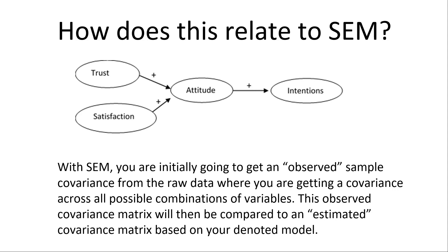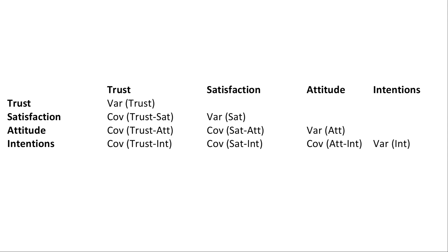Here's an example of what the observed covariance matrix looks like — it's looking at all possible covariances between constructs. Typically what you'll see on the diagonal is the variance of each one of those constructs: the variance of trust, the variance of satisfaction, attitude, and intentions. SEM takes the estimated covariance matrix and simultaneously uses all of these calculations to estimate strings of relationships.